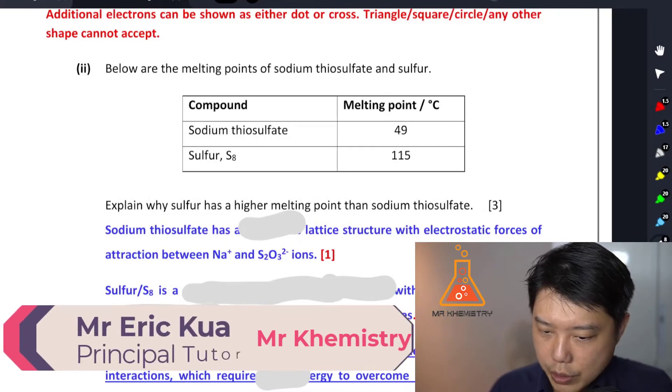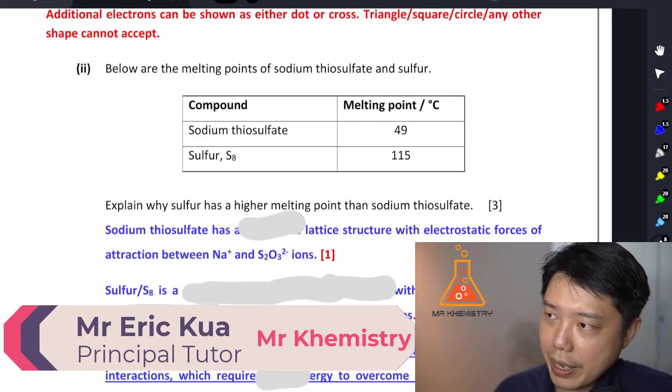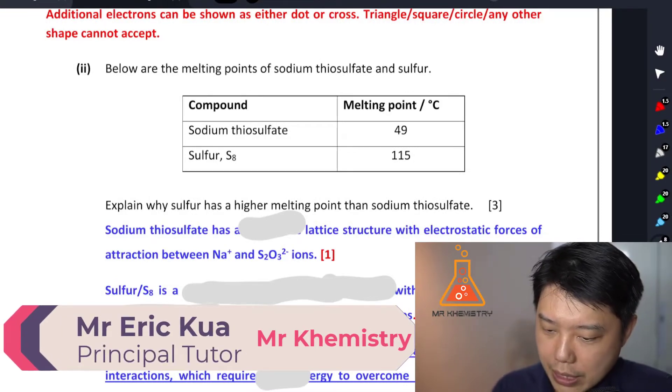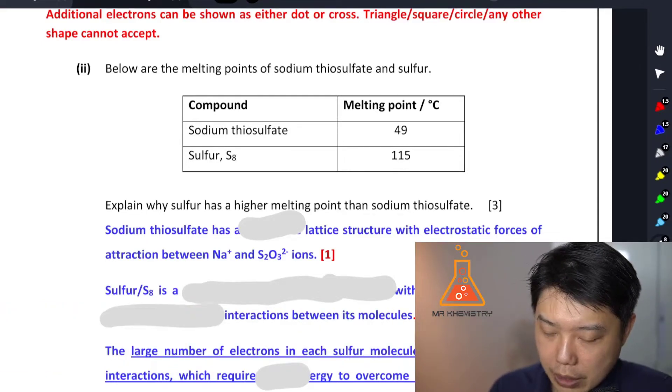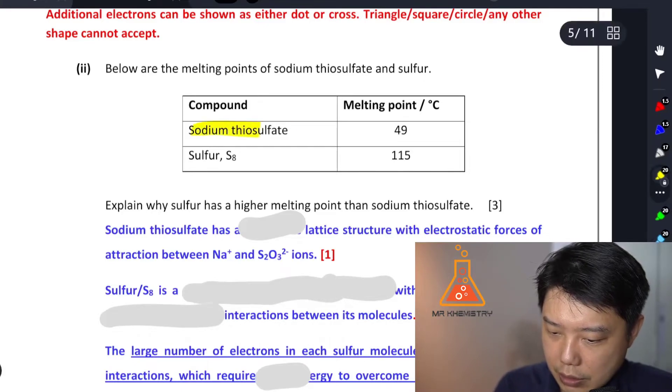All right guys, so let's look at this question which asks you to explain why sulfur has a higher melting point compared to sodium thiosulfate. So the first thing you need to recognize is sodium thiosulfate - this compound is actually ionic.